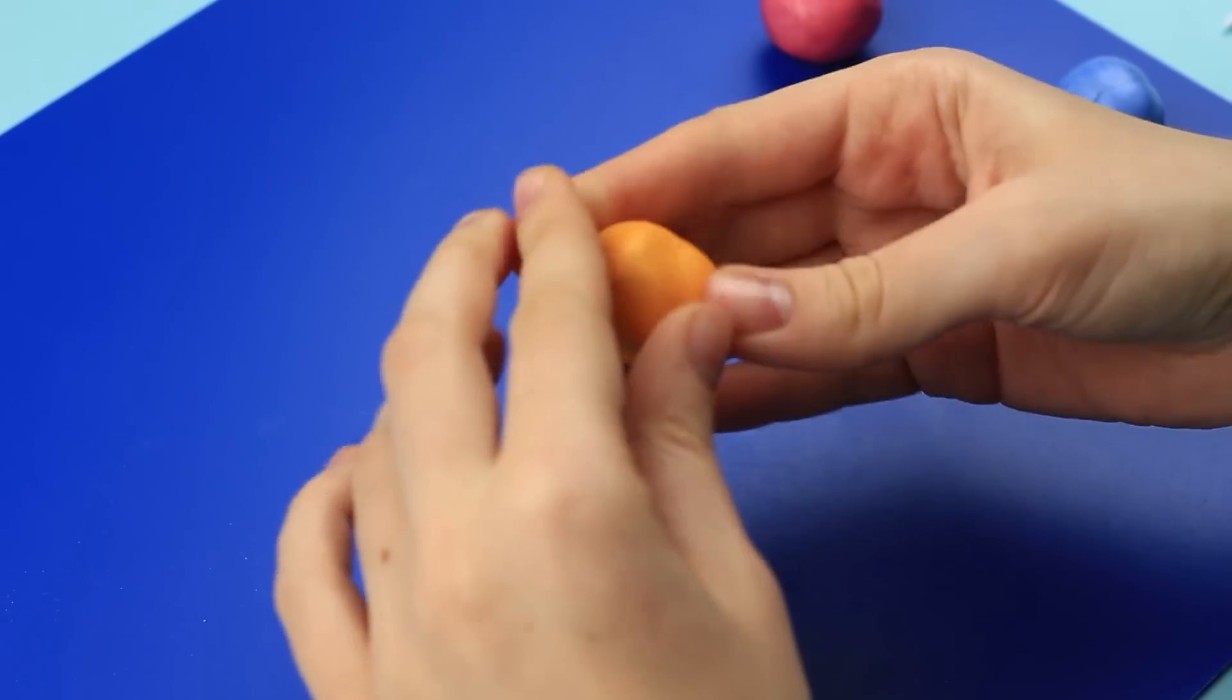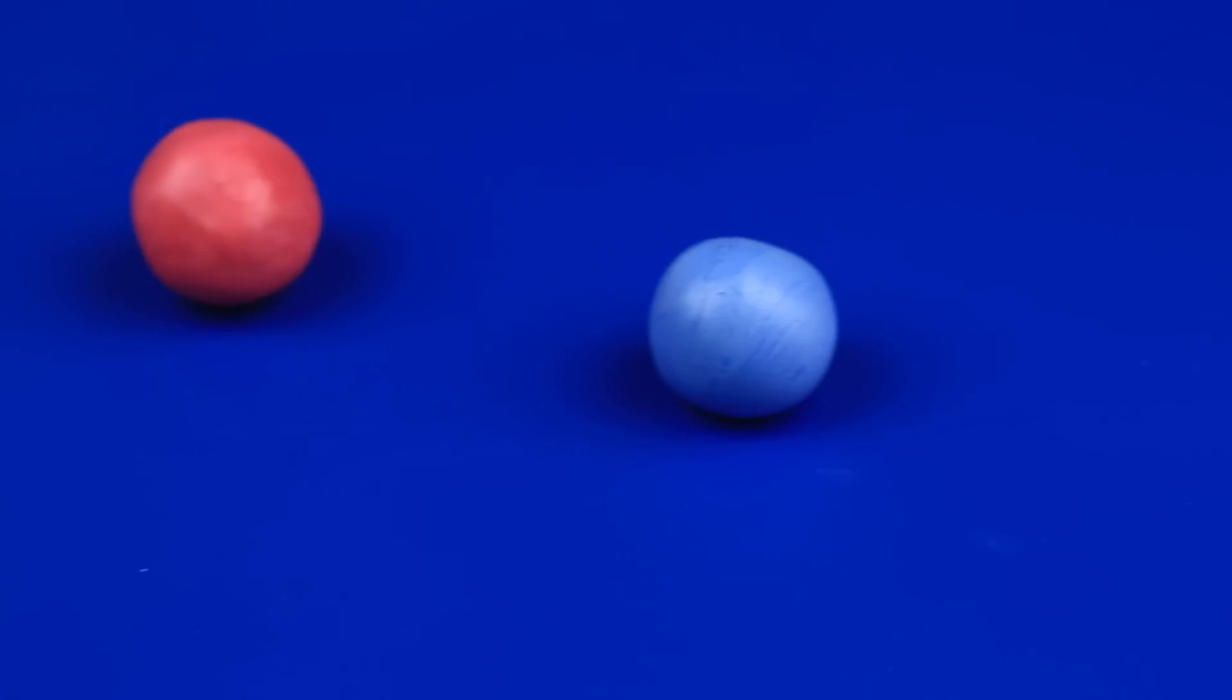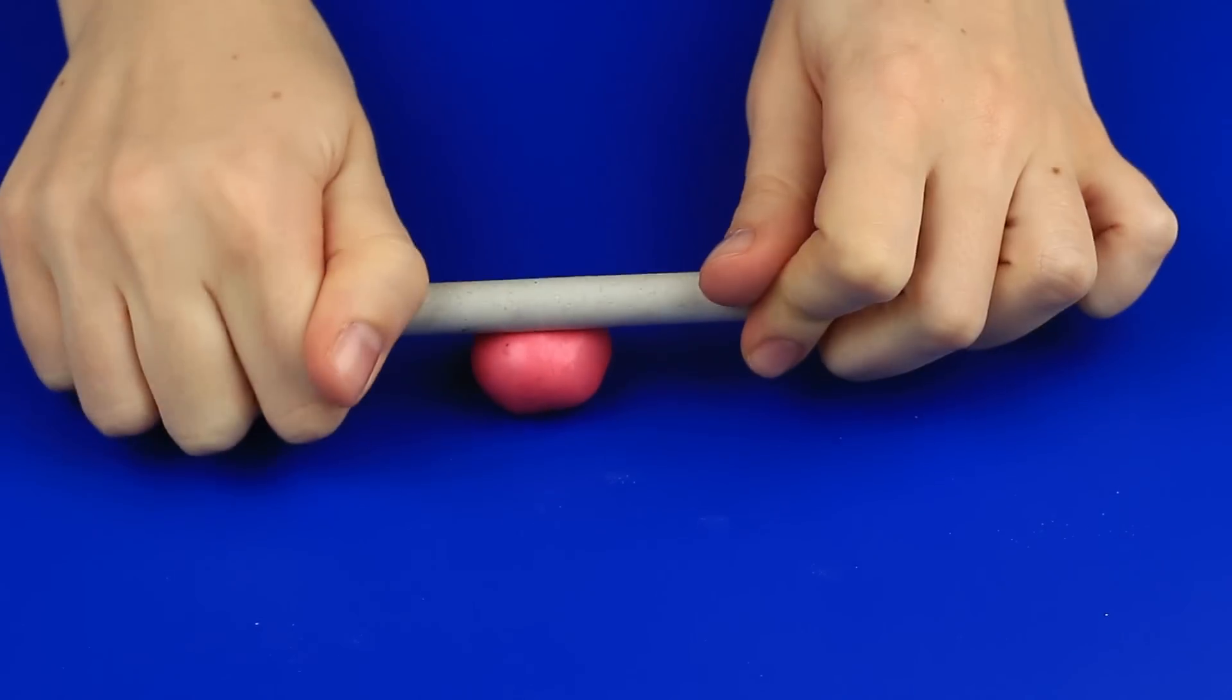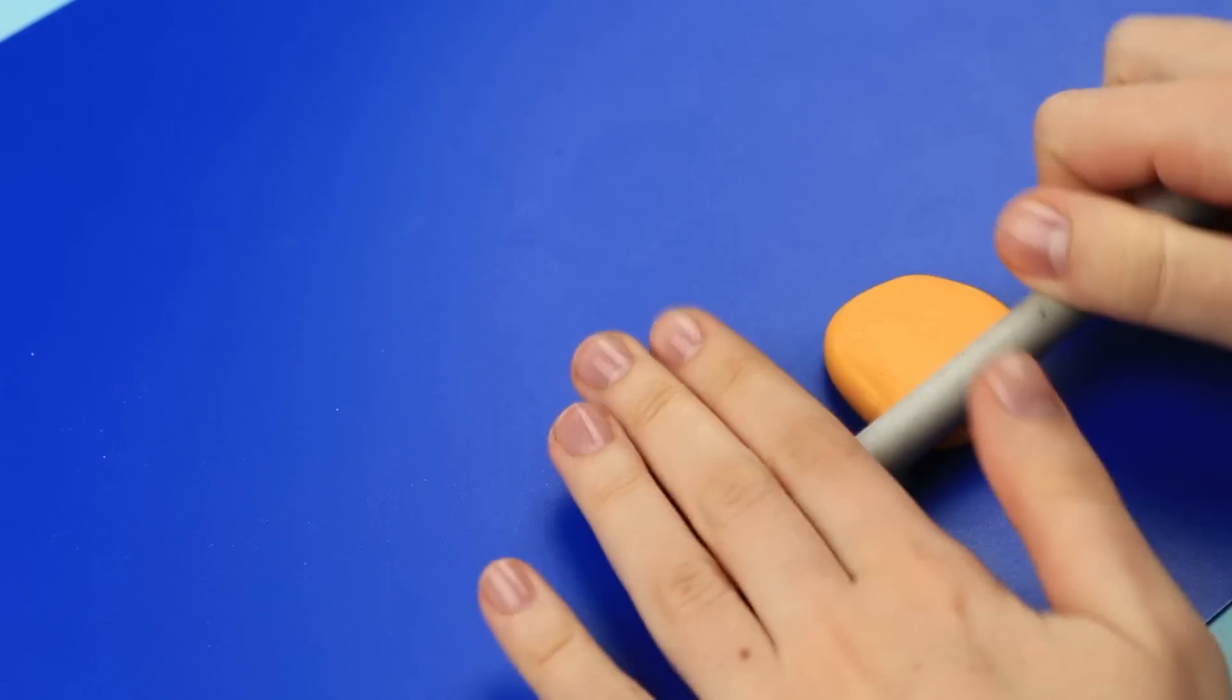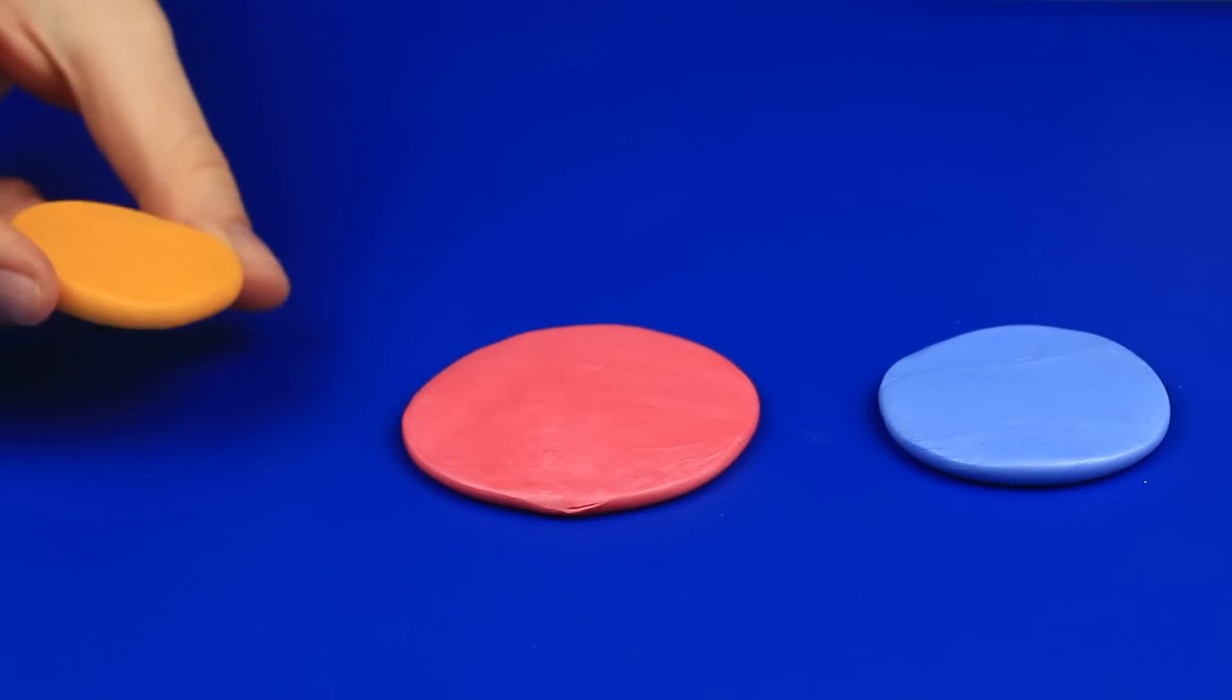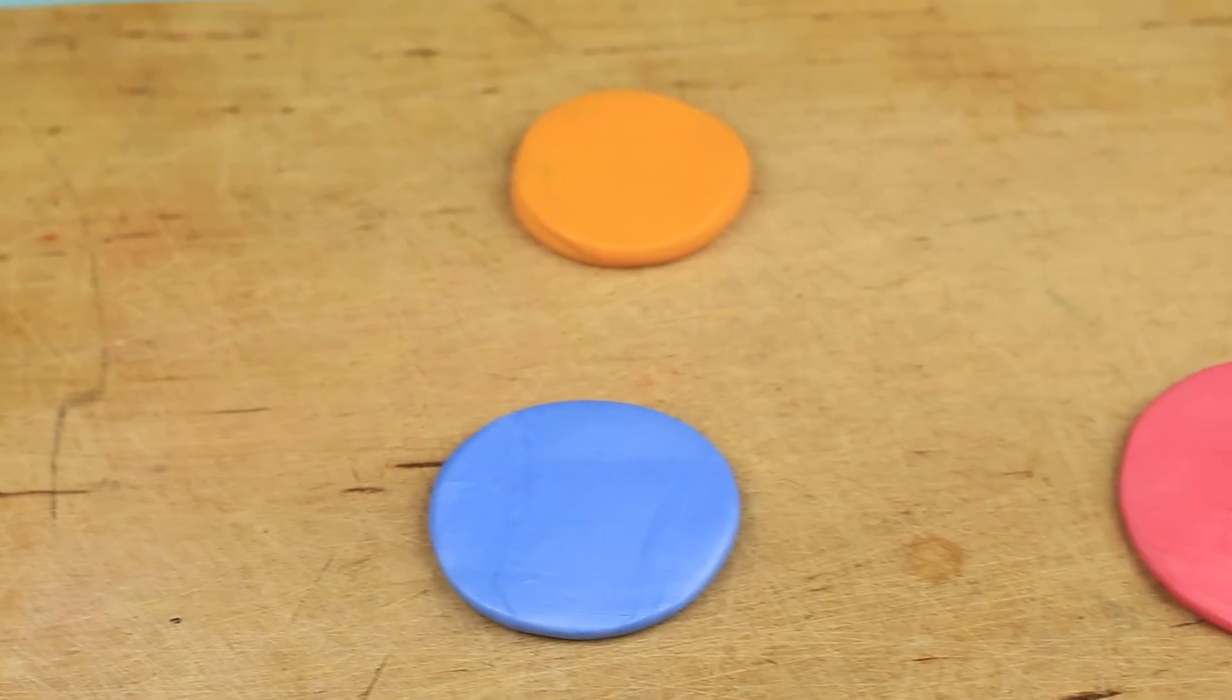Now, take three polymer clay pieces of each color and roll up balls. Roll out flat. Use a small rolling pin. The circles should not be too thin. The size varies as the stars will not be equal.